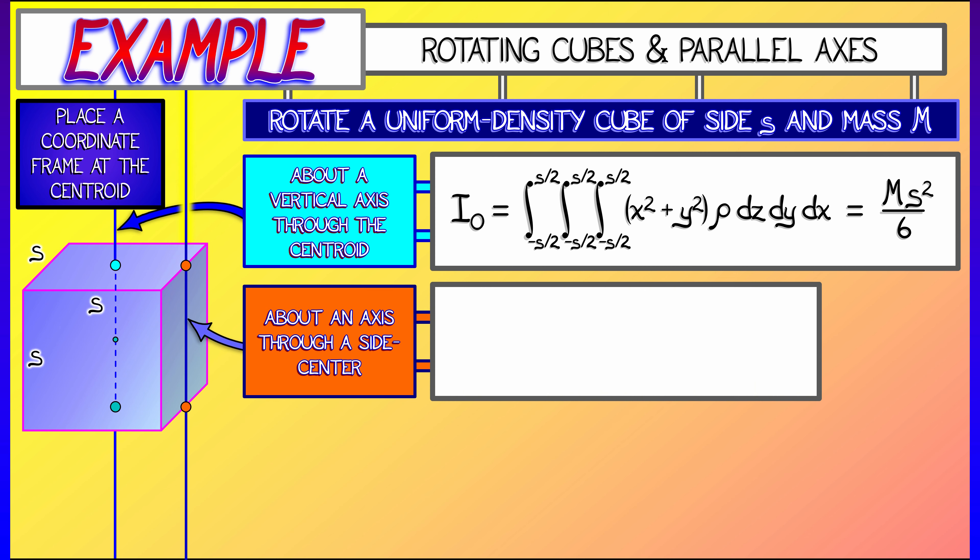Now, let's say we want to compute the moment of inertia about an axis that goes through one of the side faces, right through the middle of it. What would we do there? That would not be an easy integral to set up. But with the parallel axis theorem, we can say it's ms squared over 6 plus md squared, where d is the distance to the axis. Since that distance is s over 2, I square that to get s squared over 4, add it all together, and we get 5 twelfths ms squared.